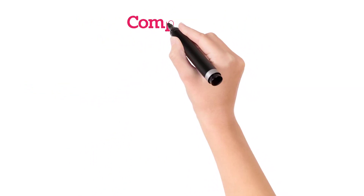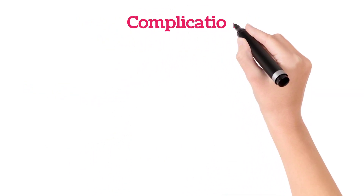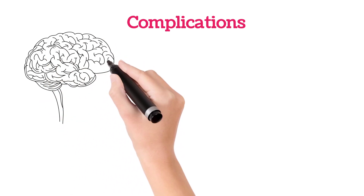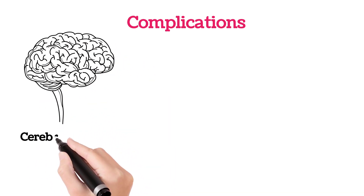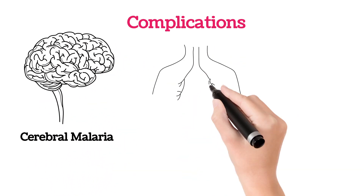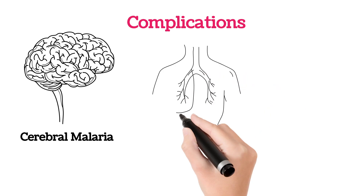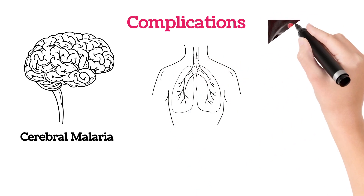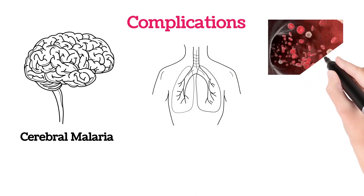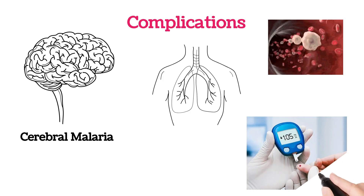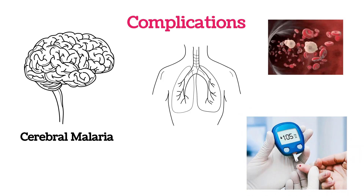If malaria is not treated in proper time, it may have complications like spreading to the brain causing cerebral malaria, breathing problems, anemia with decreased RBC and decreased hemoglobin, and low blood sugar.